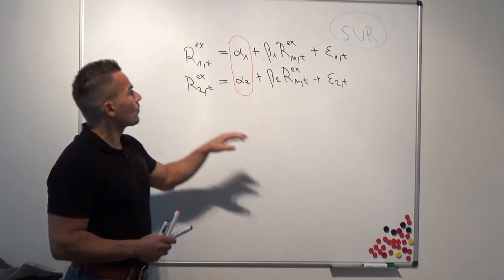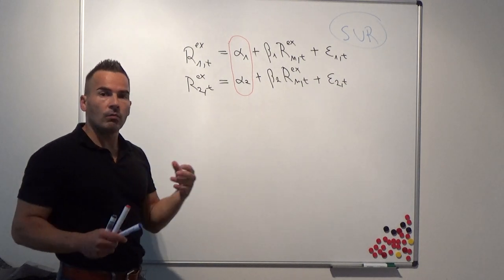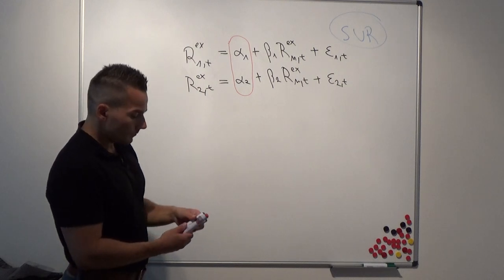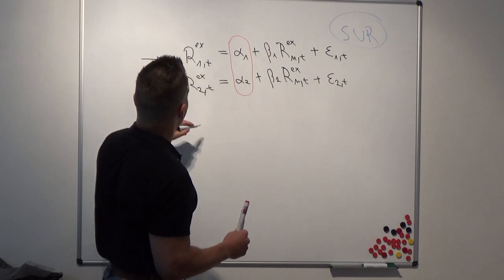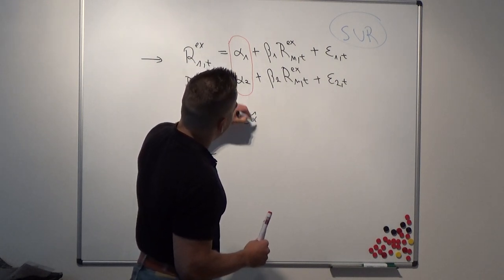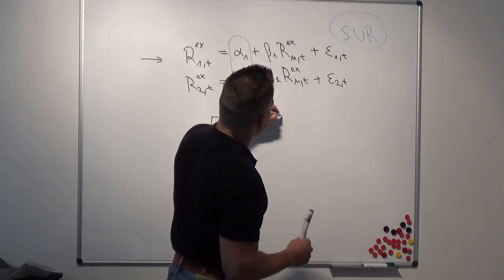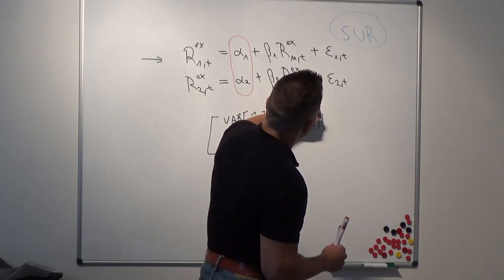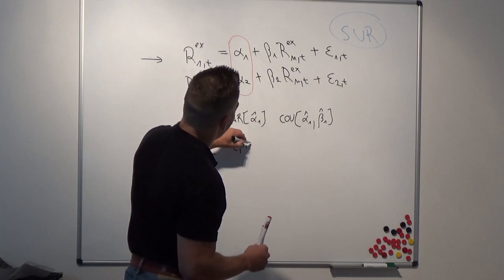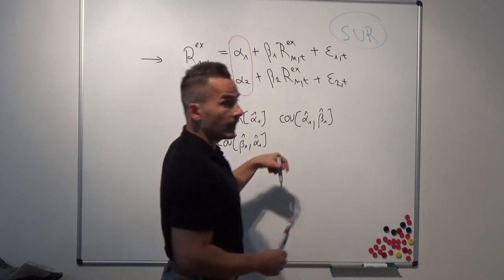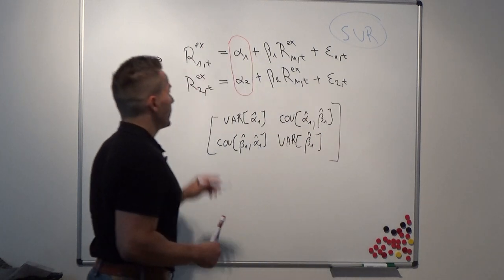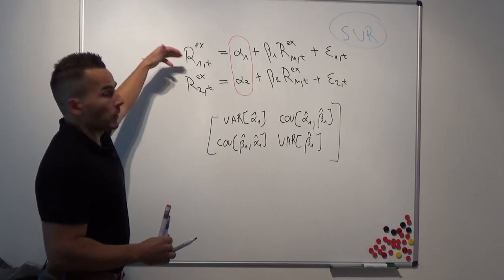If you run this model simultaneously, these two parameters have a correlation — now they have a covariance. If you have a univariate model and consider just the first equation, the covariance matrix of the first model looks like this: you have the variance of the estimated α1, the covariance of α1 and β1, the covariance of β1 and α1, and on the main diagonal the variance of β1. That's the covariance matrix of the parameters if you estimate the first equation via OLS.